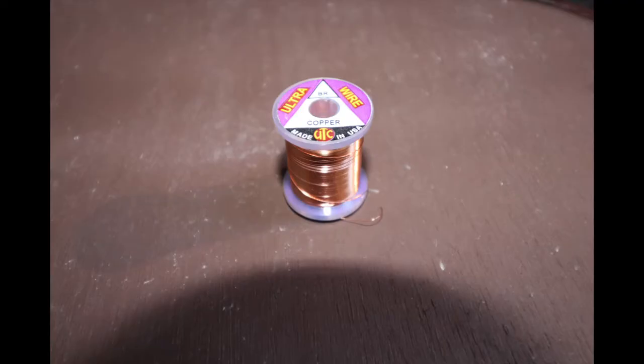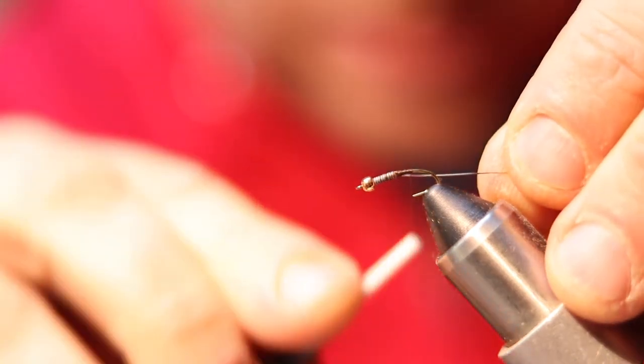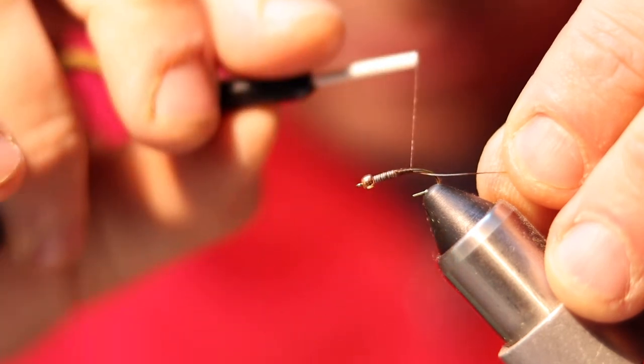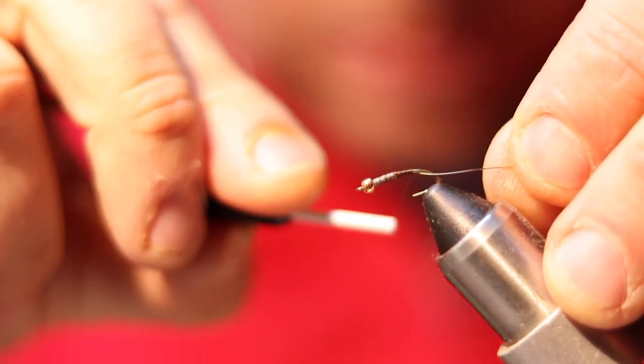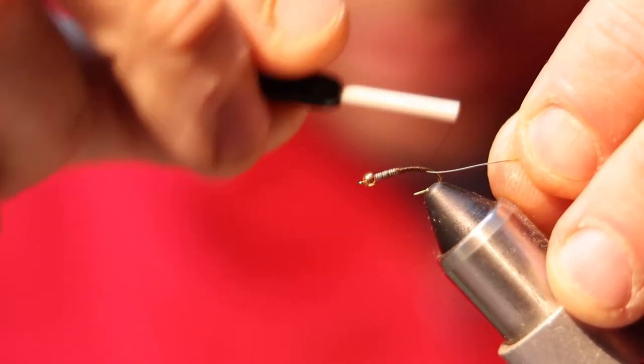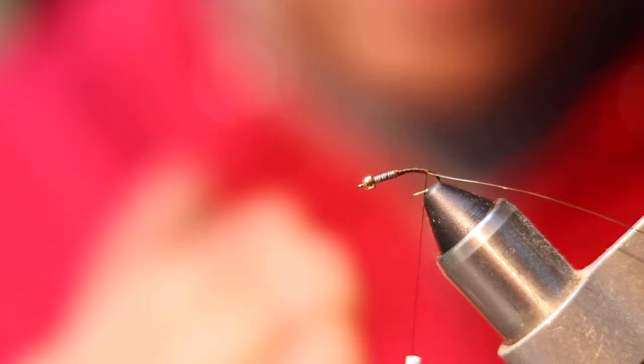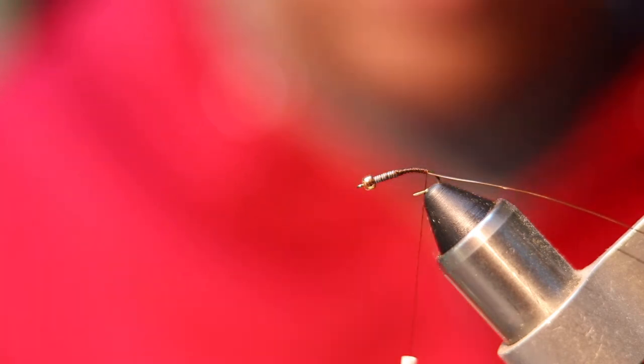Now what you're going to do is tie in your copper rib. This is a BR copper—that's the size of the copper wire. I'm just going to lay it alongside the hook and wrap it around. What I like to do is have that come out on the opposite side of the hook that's facing the camera right now, and that'll become more evident later as to why. Now you get your thread at the back of the hook, and I'm really right above where the hook barb would be.